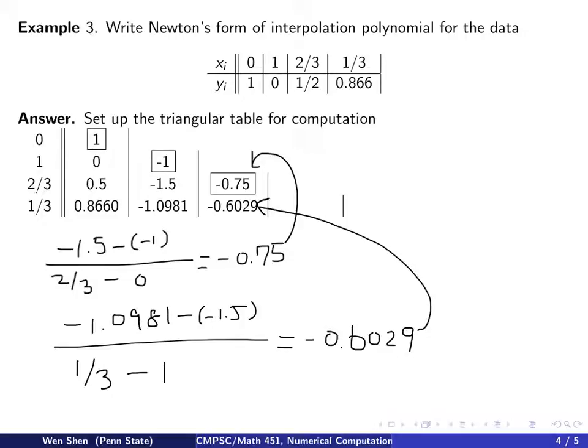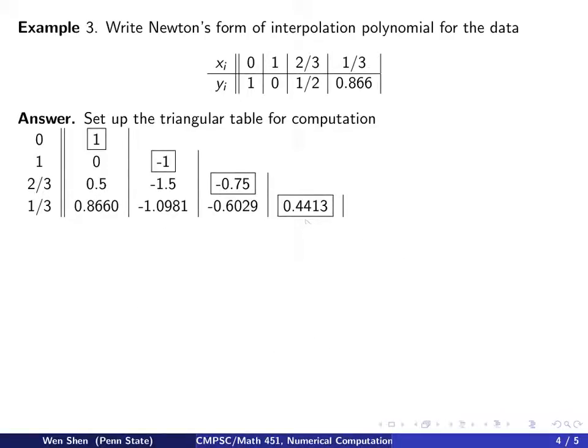So now we have two numbers left, which means we can continue one more time to compute one more value. This final value is computed by doing this one minus that in the numerator. So it's negative 0.6029 minus negative 0.75. And then what's in the denominator? So remember, this is the divided difference with 4 x's in there. So you have to skip the middle two. So you would take the last x minus the first x. So it's 1/3 minus 0. And then you work out these numbers, and that is exactly what you get, 0.4413.